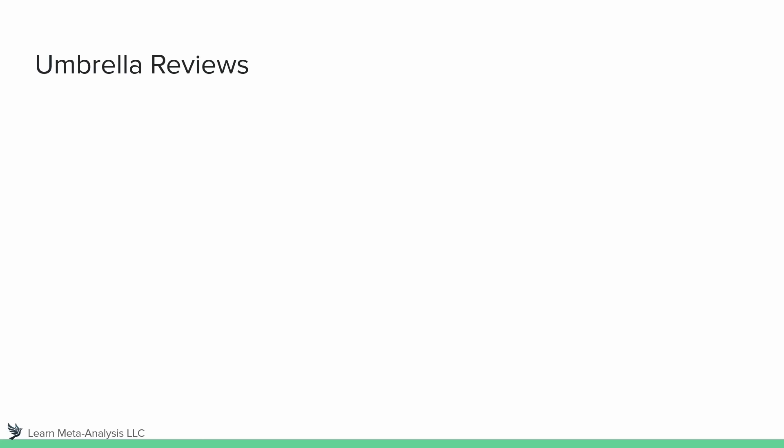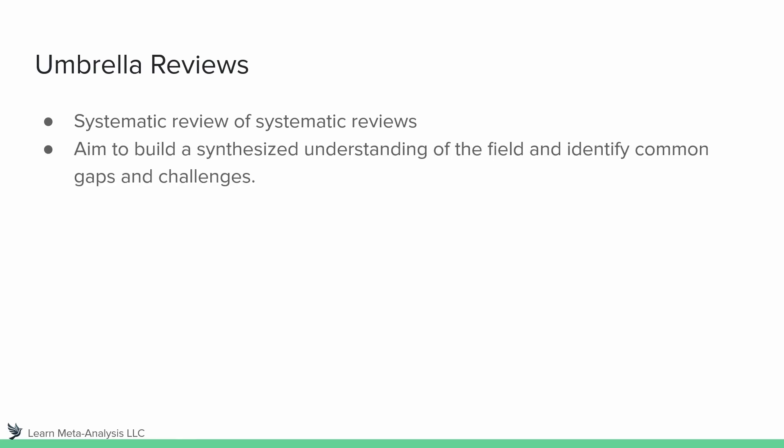One last type of review that we see in education — we see it more in other fields but it's coming into the educational field — is umbrella reviews. These are a systematic review of systematic reviews. So with a systematic review, we are generally looking at primary studies, whereas with an umbrella review, we are conducting a systematic review of systematic reviews. They aim to build a synthesized understanding of the field and identify common gaps and challenges seen across all of those systematic reviews. That pretty much wraps up our video here — I look forward to seeing you in the next video. Thank you.